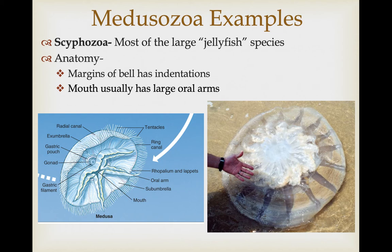Some examples of medusazoans: the Scyphozoa is a subclade representing most of what you'd see as large jellyfish species. If you see a large jellyfish washed up on a beach, it's most likely a scyphozoan—here's one that washed up when I was doing field work in Taiwan. One way to identify a scyphozoan is the indentations in the margin of the bell, this scalloping, and within those indentations are two fleshy-like structures called lappets surrounding a sensory region called the rhopalium.